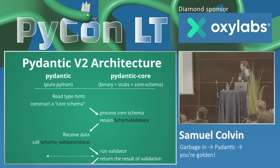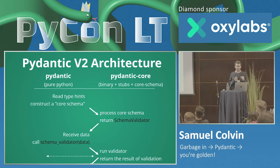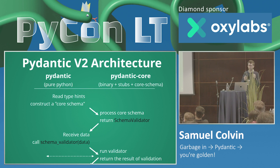We have effectively the same process for the SchemaSerializer, which does the same thing but for serializing a model or piece of data. And one of the coolest but also most mind-bending bits of Pydantic V2: we use pydantic-core to validate pydantic-core schema itself. So when you construct a Pydantic SchemaValidator, we run validation on the schema you pass and raise errors — which is really helpful and obviously incredibly confusing when you encounter it.